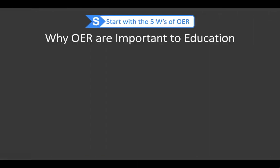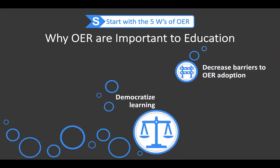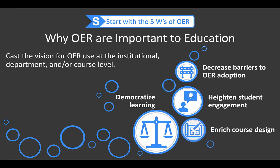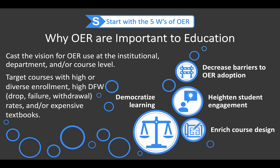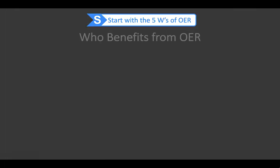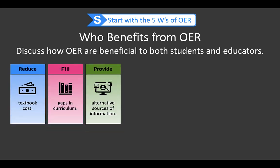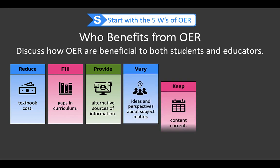Considering why OER are important to education, and which of those reasons are most important to you, the department, or the institution as a whole, assists in casting the vision and setting specific goals for their use. Targeting courses with high or diverse enrollment, high drop, withdrawal, or failure rates, and or expensive textbooks is an effective way of doing this. Focusing on who benefits from OER and discussing how students, teachers, and faculty all benefit from OER provides the driving force for meeting established goals and fulfilling the vision.